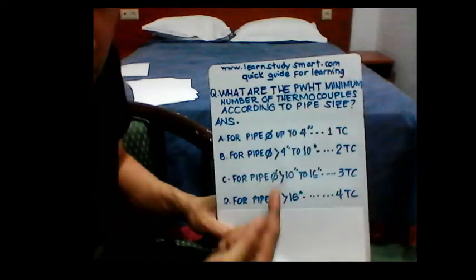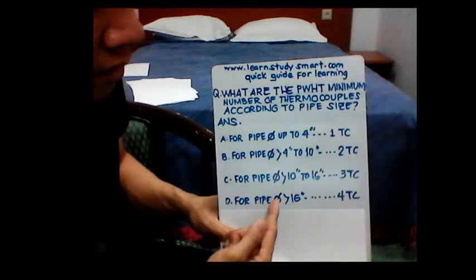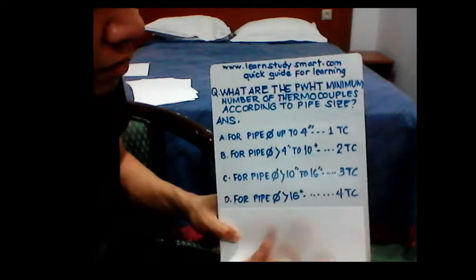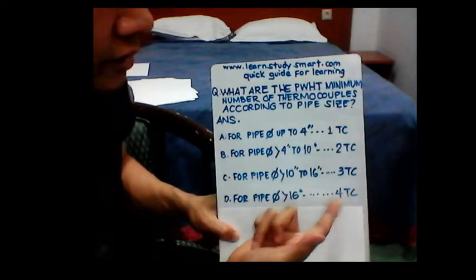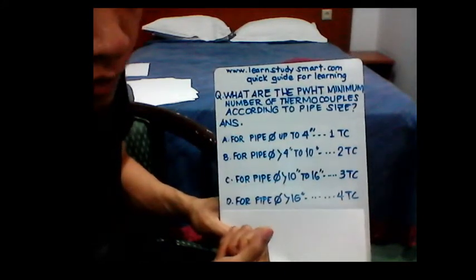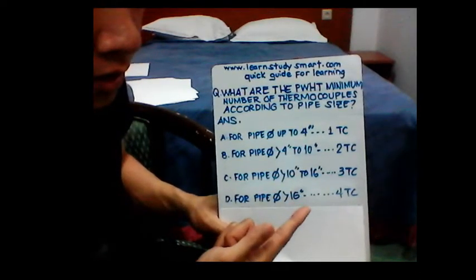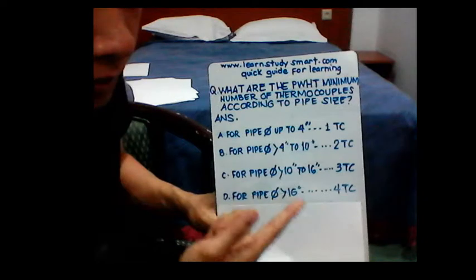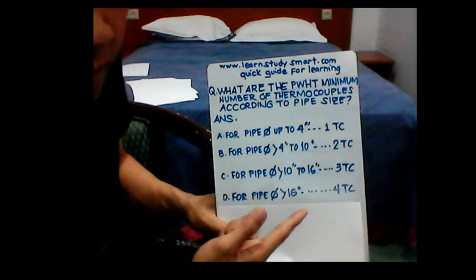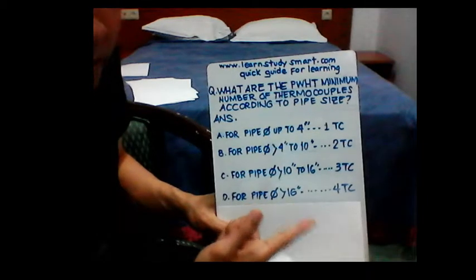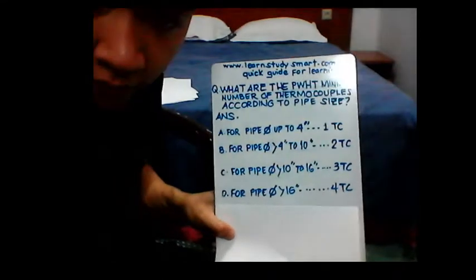For the positioning of the thermocouples, they should be at least equidistant from each other. For instance, if you have four thermocouples, then the positions will be zero degrees, 90 degrees, 270 degrees, and 360 degrees. That's it guys, see you again next time for another training.